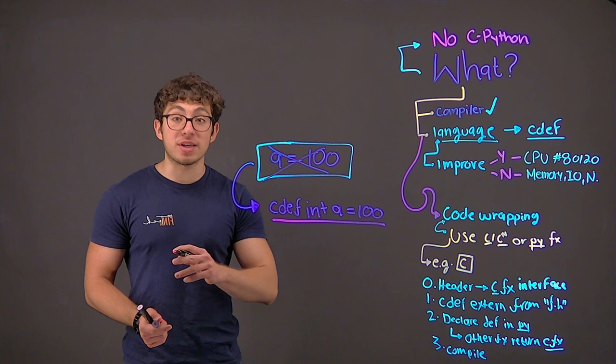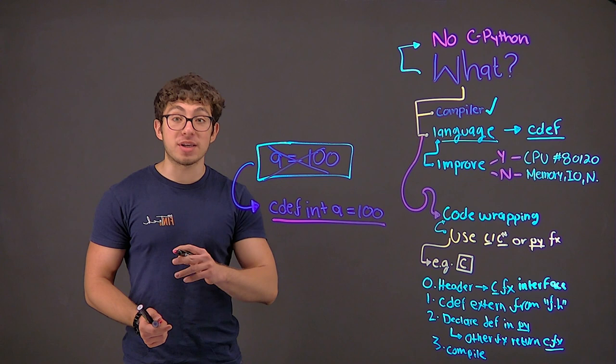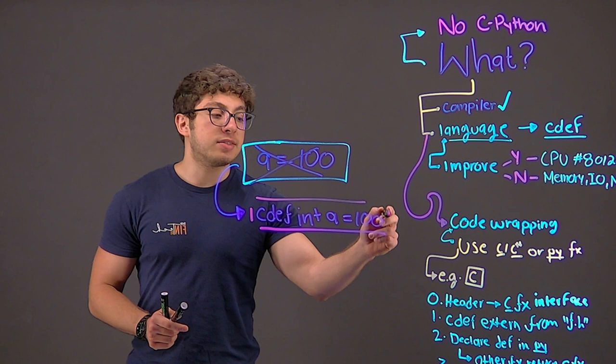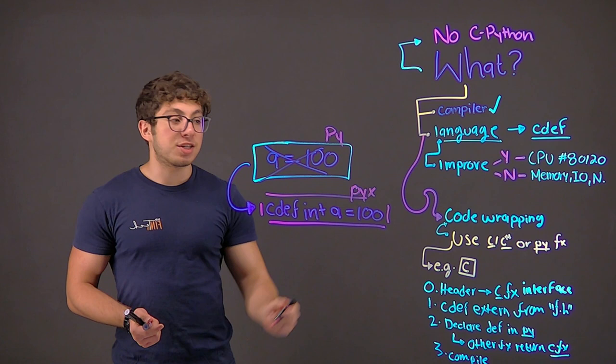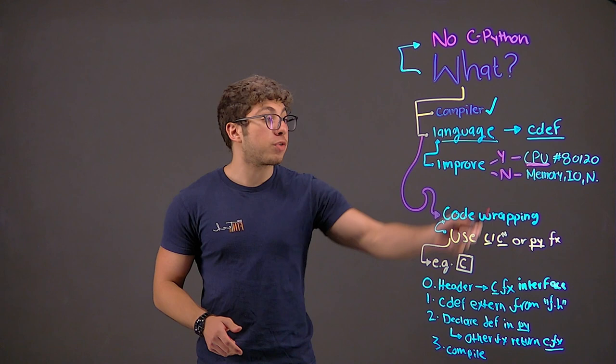This is the difference with Scython. We take the type statically typing of C and apply it to Python. Therefore, reducing some overhead of the language and make the code faster and more efficient after compilation. This is how we would define the same variable in Python, but in Scython, which has an extension of .pyx compared with Python.py.